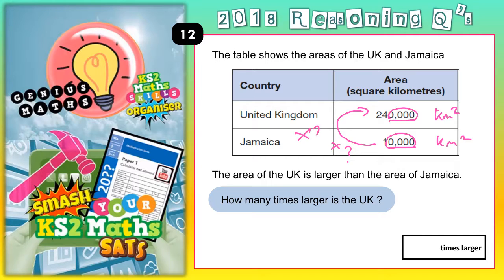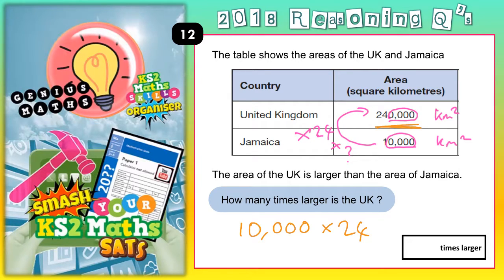1 times 24 would be 24, so let's just double check. We're saying that 10,000 times 24 — we're hoping it gives us 240,000. Because if it does, then the answer is 24.